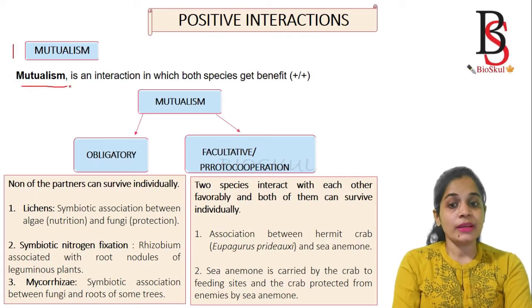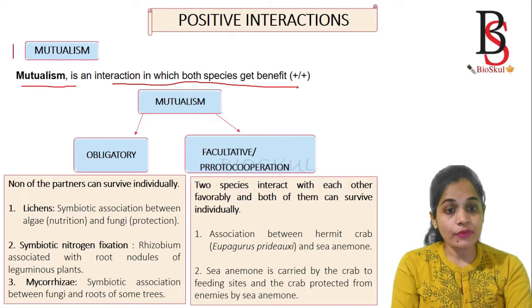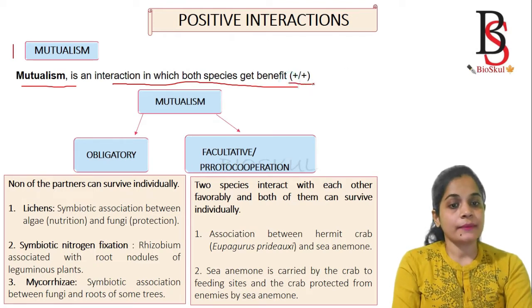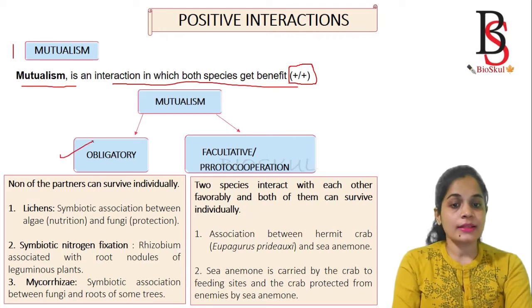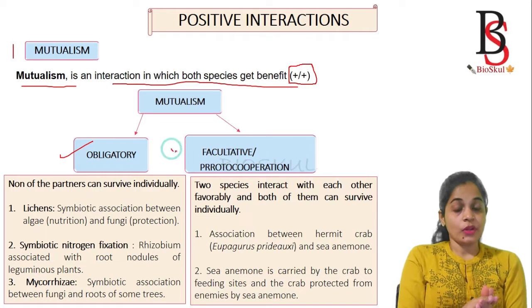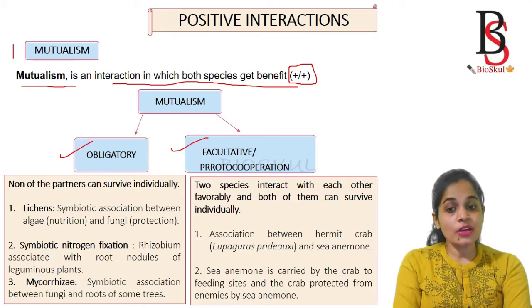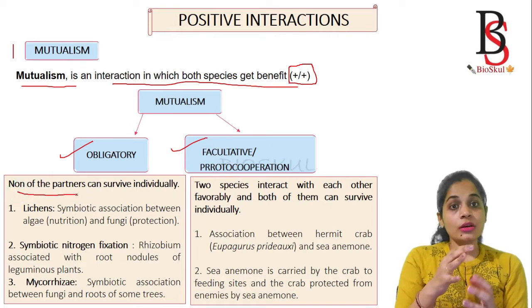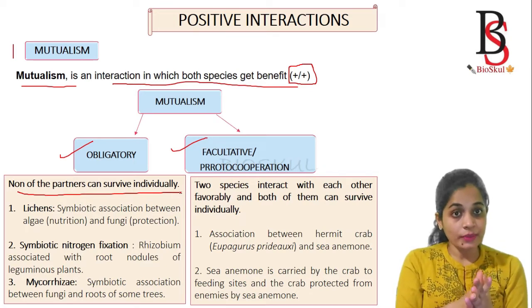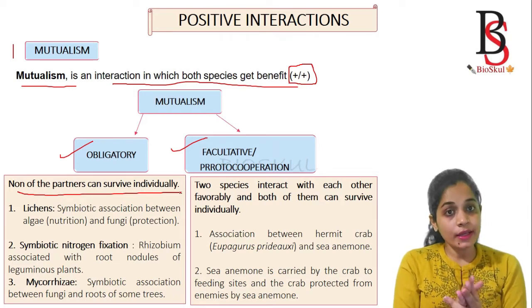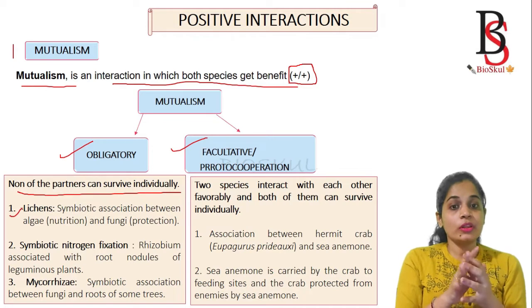The first positive interaction is mutualism. Mutualism is the interaction in which both species get benefit from each other, represented by a plus-plus sign. Mutualism is further divided into two types: obligatory mutualism and facultative mutualism. In obligatory mutualism, both partners depend on each other — neither can survive individually.